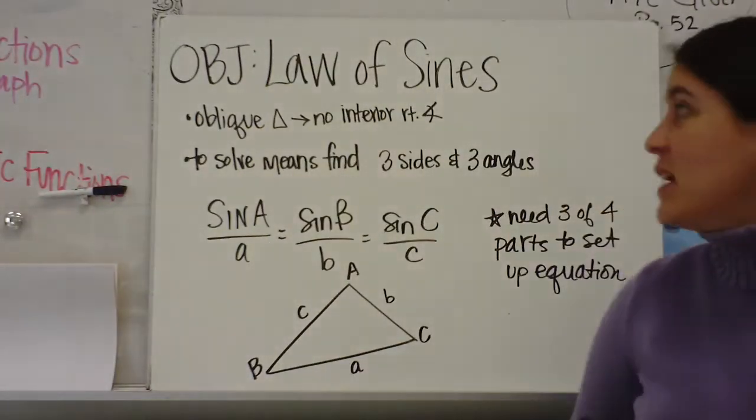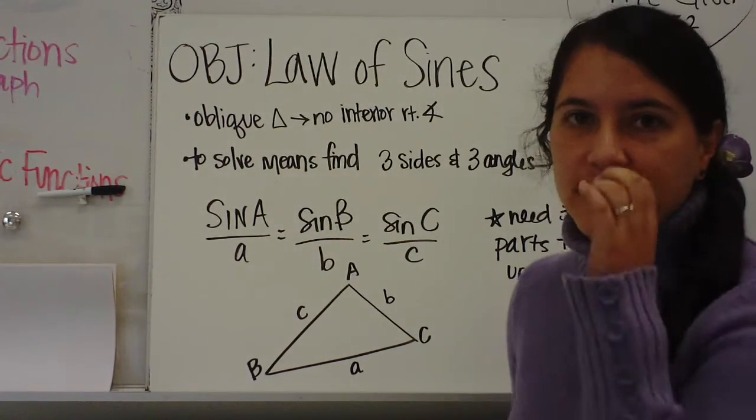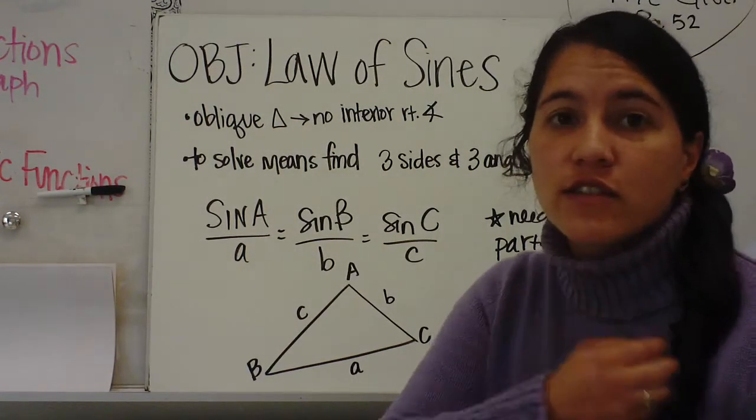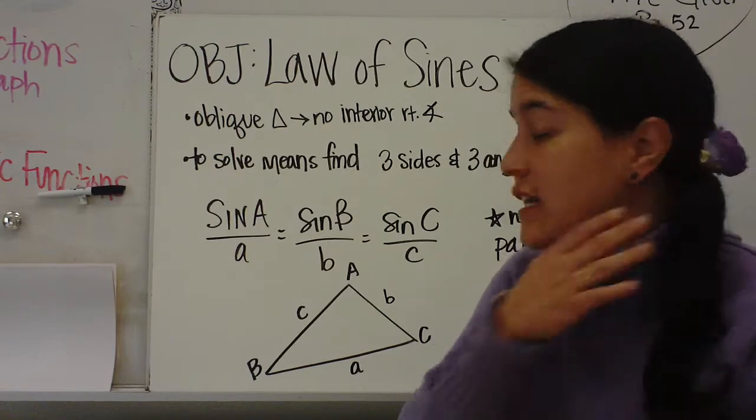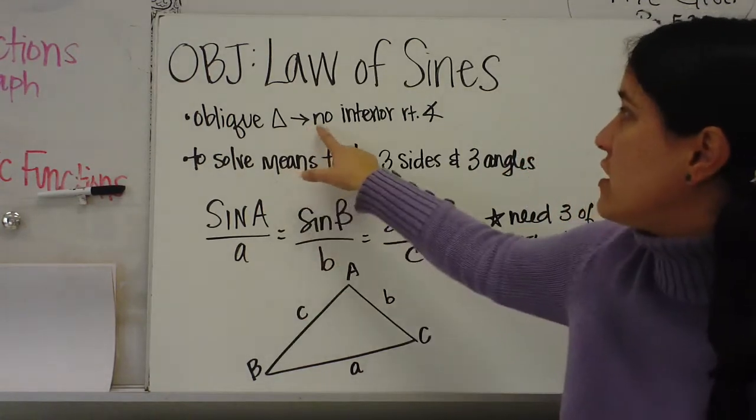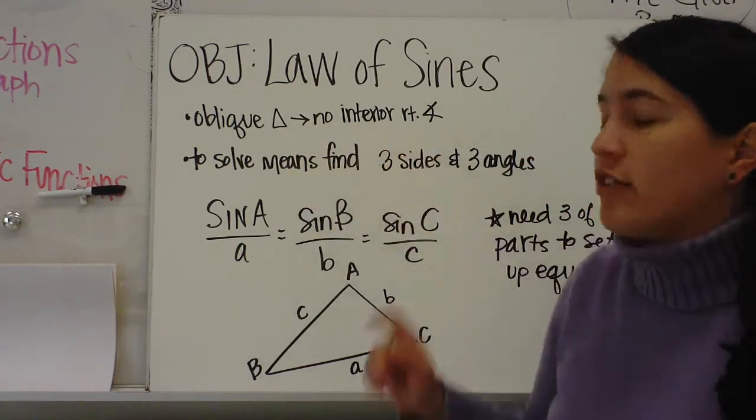Hey y'all. Today's lesson is Law of Sines. You're going to use the Law of Sines when you have oblique triangles. An oblique triangle is a triangle with no interior right angle.